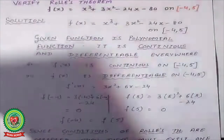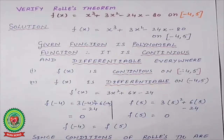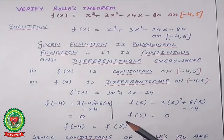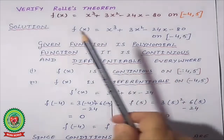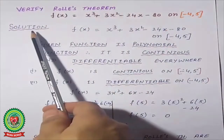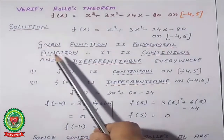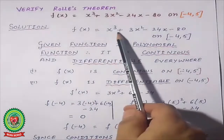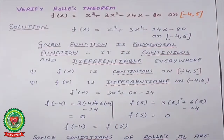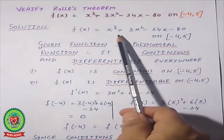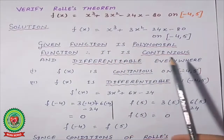Now let me take a worked example to apply Rolle's theorem. Listen carefully — whatever pattern I follow, you must follow the same pattern and language, because this is a theorem-based question and we cannot change the language or sentence structure. First, write down the statement. The given function is a simple polynomial, and for a polynomial, substituting any value gives a definite answer. Therefore, it is continuous and differentiable everywhere.